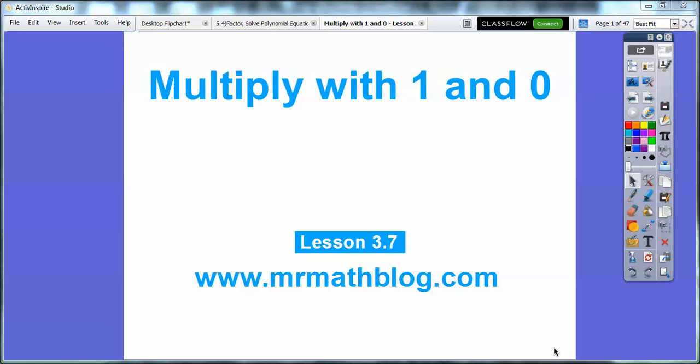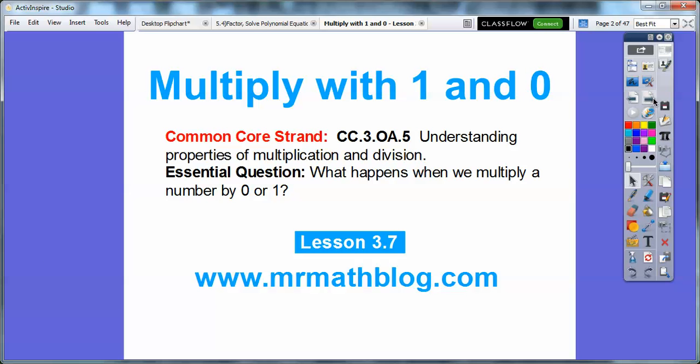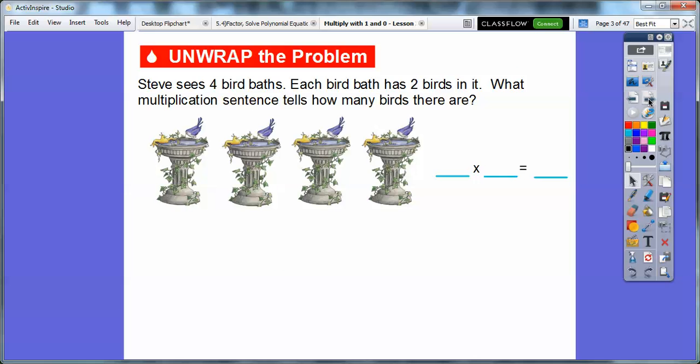Hey folks, Mr. Math Blog here. This lesson is Multiply with 1 and 0. This is the last lesson in this chapter, so we have a test coming up soon. Our essential question is what happens when we multiply a number by 0 or 1? We have a few examples in this lesson right here.